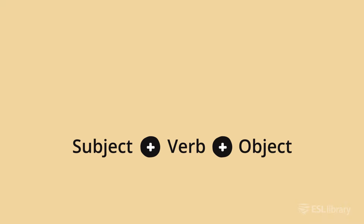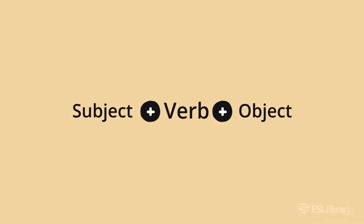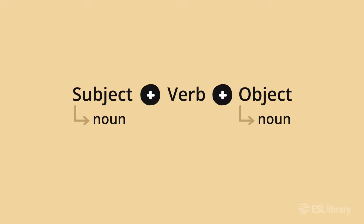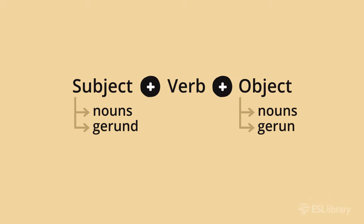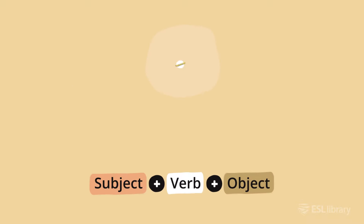The basic sentence pattern in English is subject, verb, object. Subjects and objects are usually nouns, but gerunds and infinitives can also function as the subject or object of a sentence.